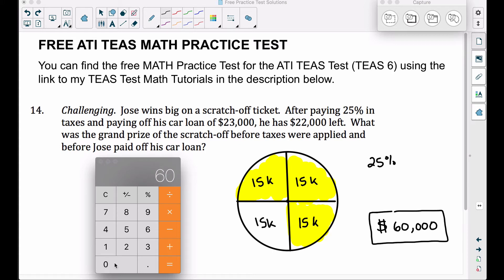Therefore, we need to subtract $60,000 minus $15,000 in taxes. So we just subtracted off 25% of his winnings, which leaves him with $45,000. Hopefully these numbers are looking familiar. Now what else did he do? He paid off his car loan, right?